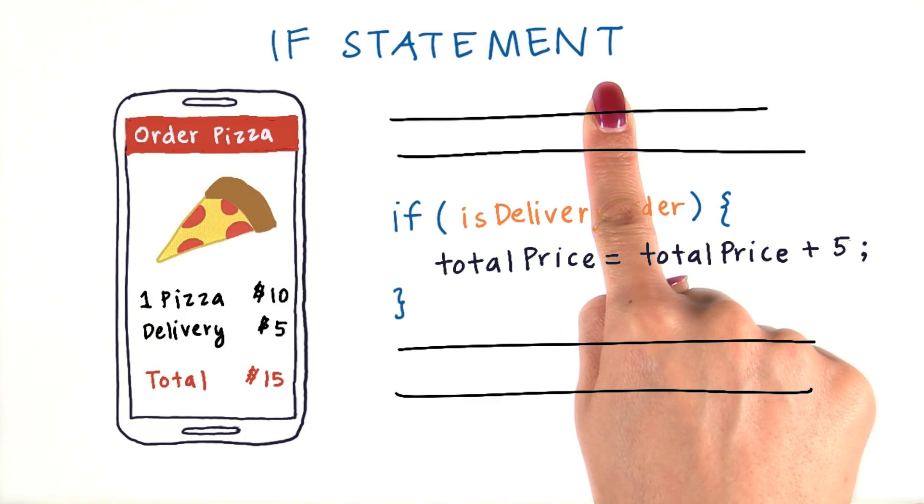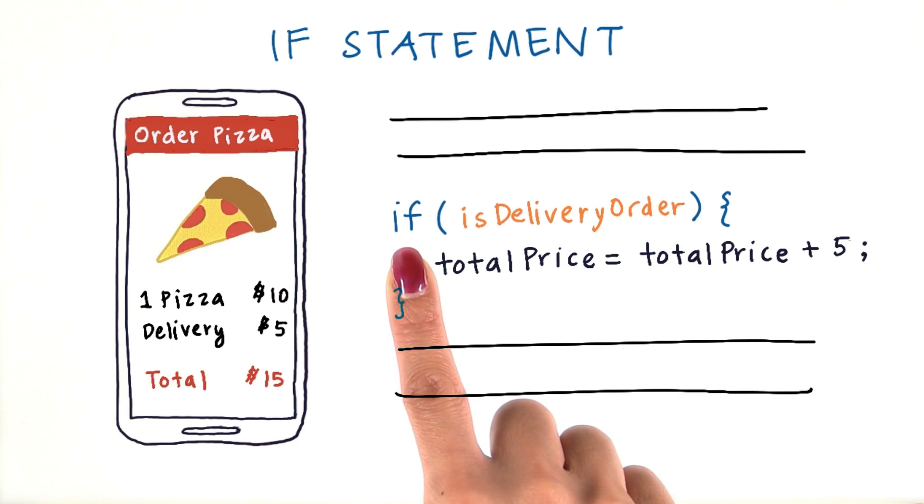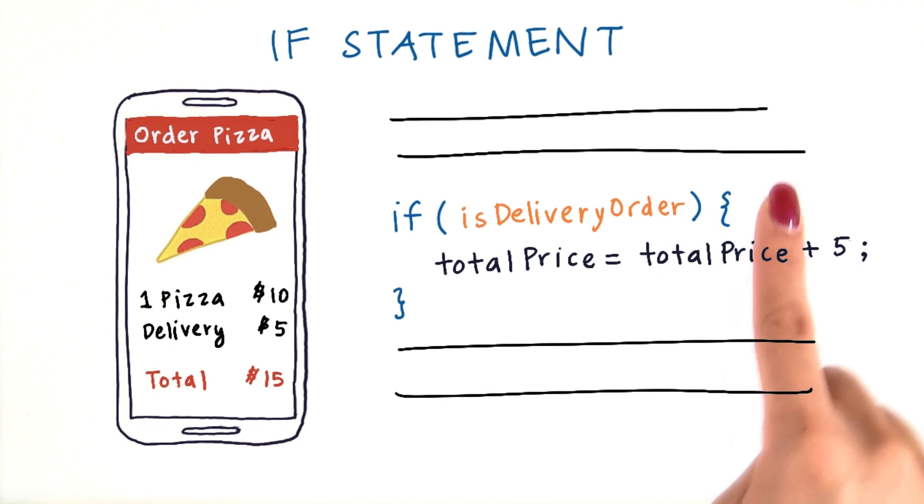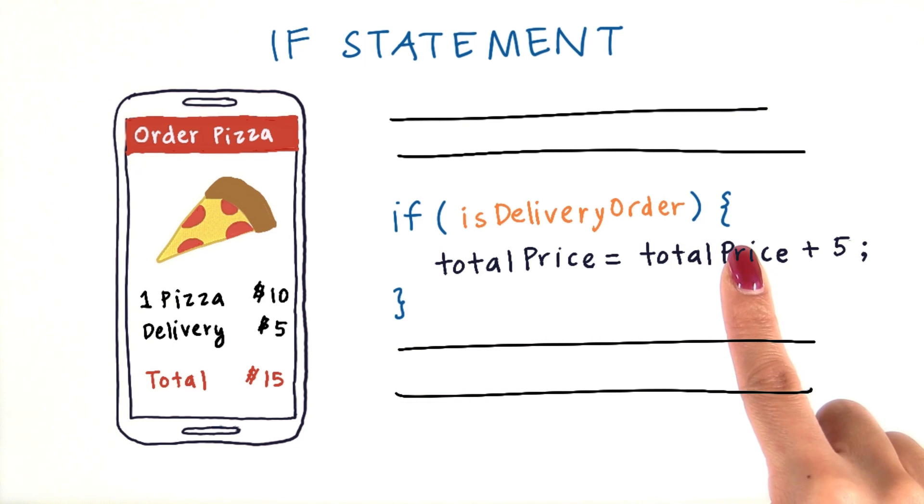The if statement is the simplest control flow statement. Notice the syntax here. We start with the word if, and then we have parentheses around the condition. And then we have an opening brace, and then a closing brace at the end of the if block of code.